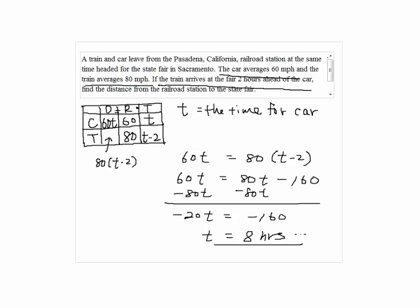So the car took eight hours, and then the train took two hours less than that, so eight minus two, which is six hours for the train.